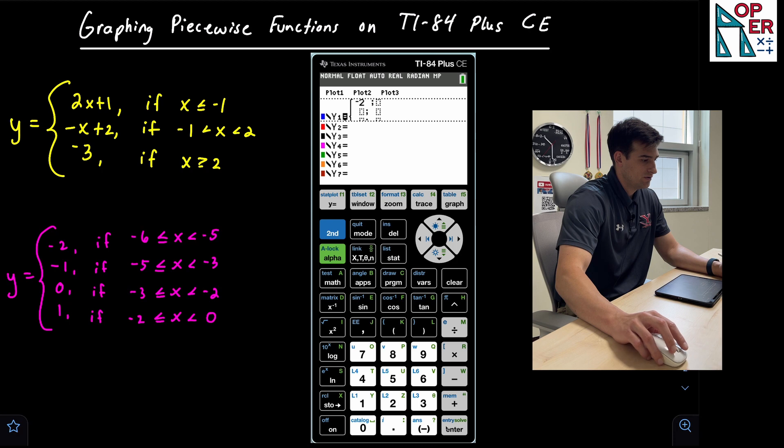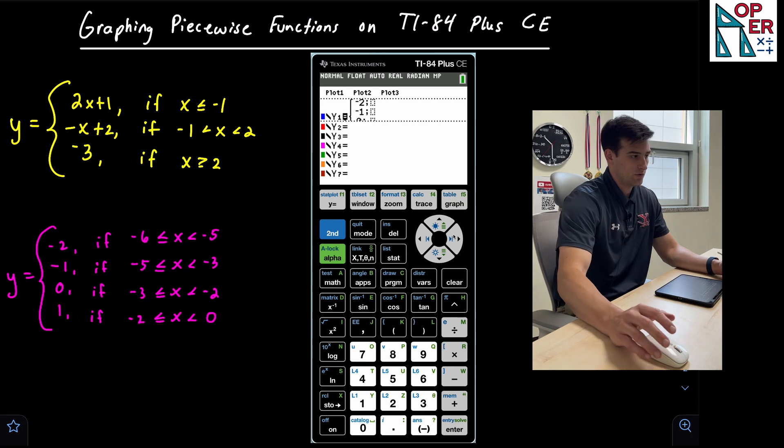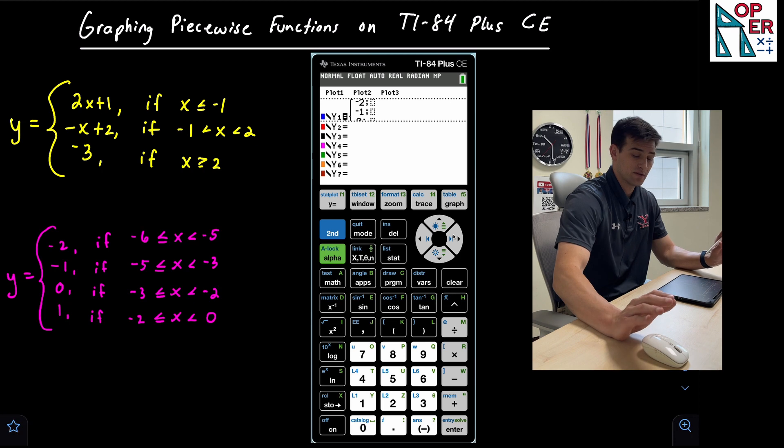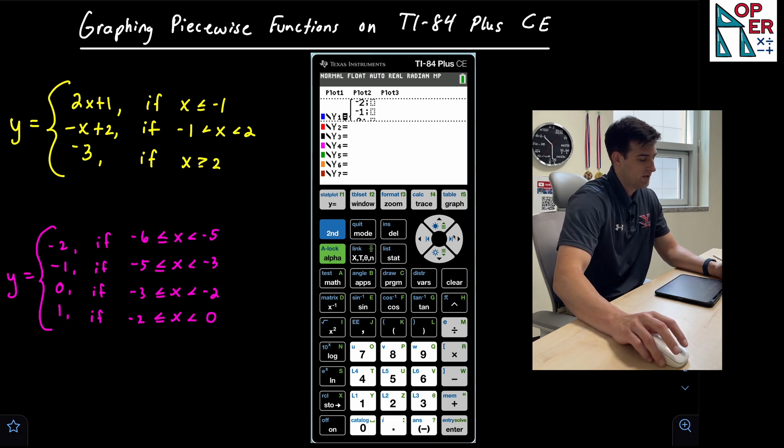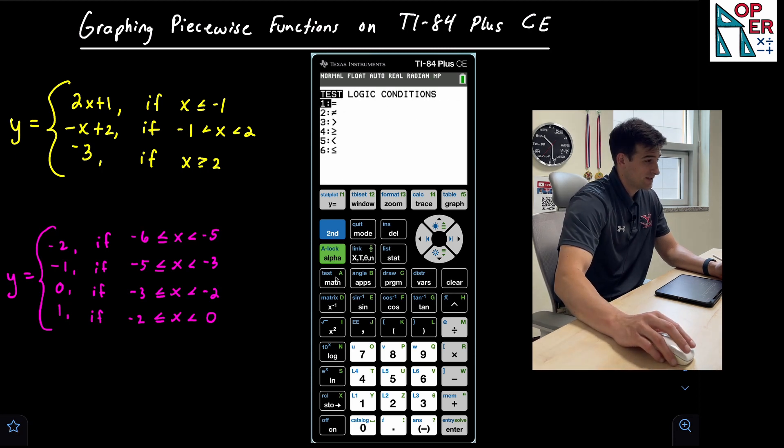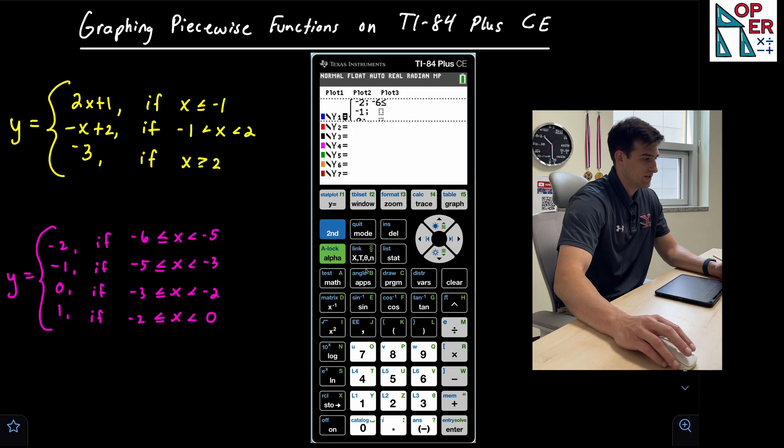So here we just have negative two, and then I'm just gonna go down so I can input these pretty quickly. Negative one, zero, and one. So now I'm gonna go back up and insert my domain restrictions. So for when Y is equal to negative two, that's between when X is greater than or equal to negative six and less than negative five. So we can go ahead and type in negative six. We're gonna do second math to get our inequality symbols, and we want less than or equal to, which is option number six. And then we do our variable, second math. Now we want just less than, which is option five.